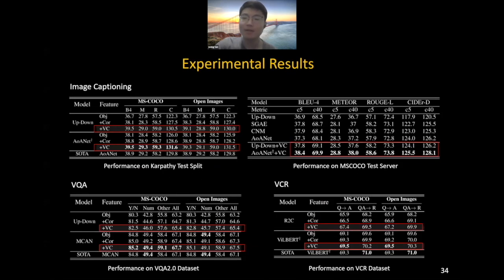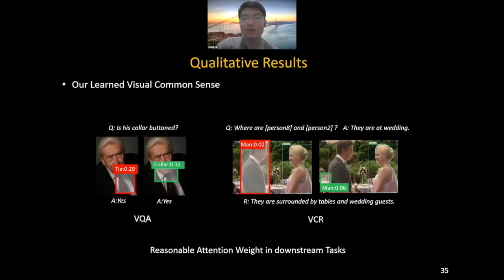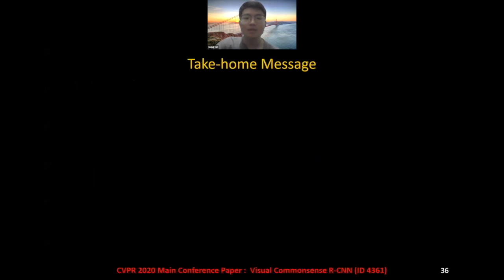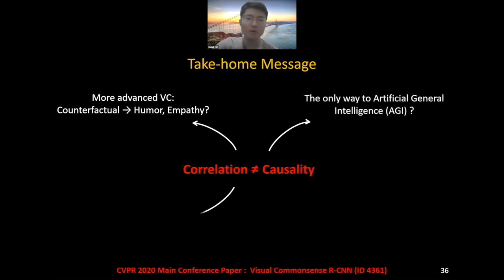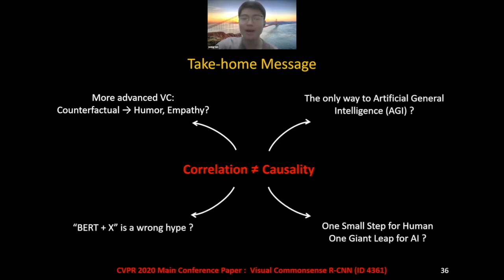We show part of the experimental results. We can see that concatenating our VC feature, the models receive huge performance improvements in all downstream tasks. We further visualize quantitative experiments using our VC feature compared with using pure object features in VQA and VCR tasks. We can see that with our VC feature, the model gets more reasonable attention weights. To sum up, our community has long agreed that correlation does not equal causality. However, few works have made progress applying this truth in the CV community. We want to highlight that this golden truth deserves more attention now, and it still has a lot of potential waiting for us to exploit. That's all. Thank you.